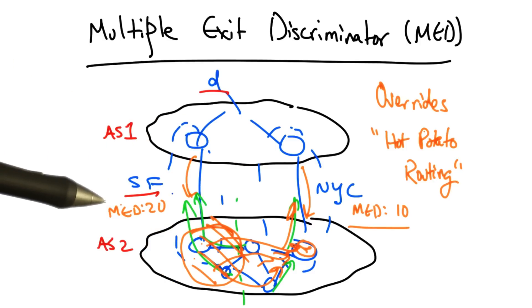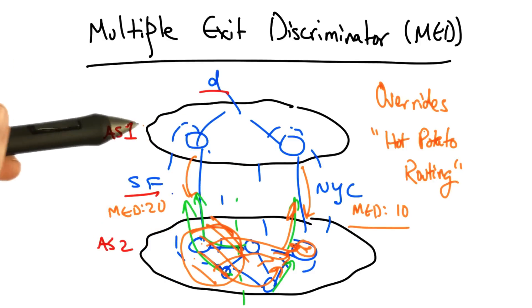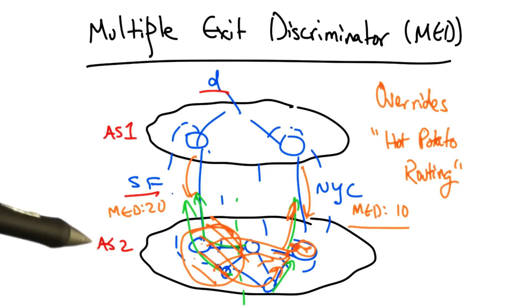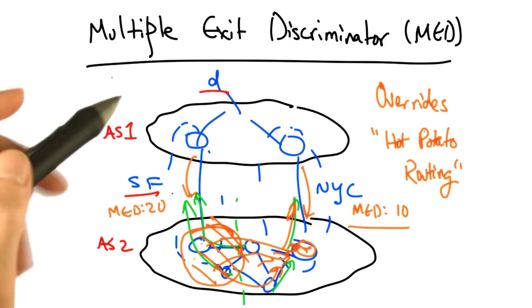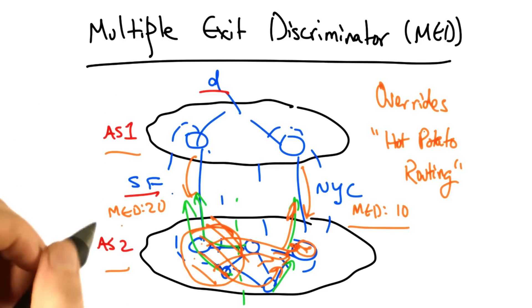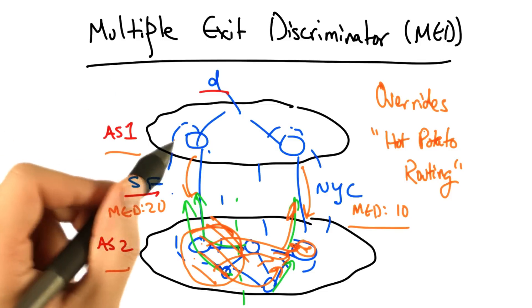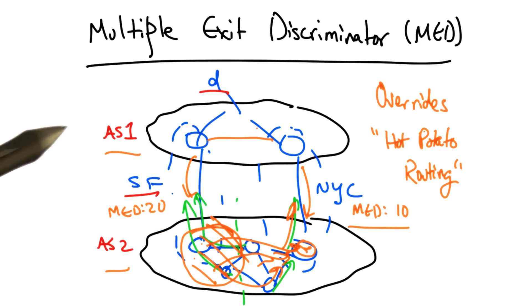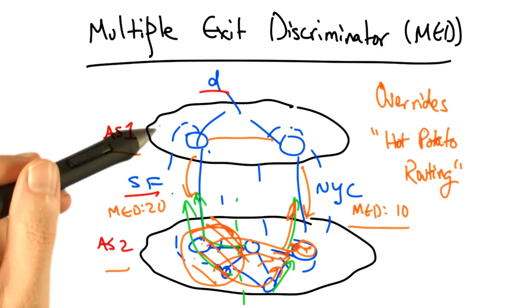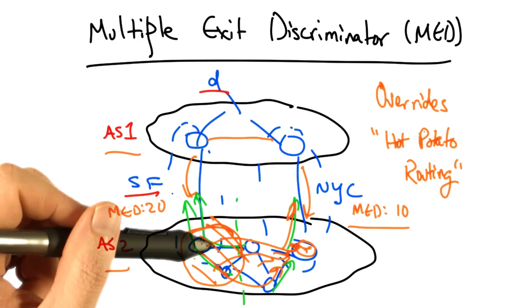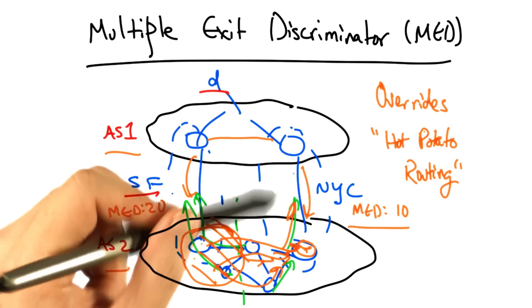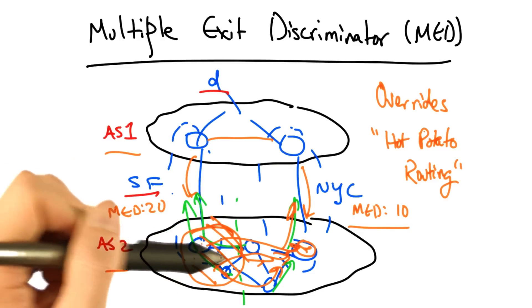MEDs are typically not used in conventional business relationships, but they're sometimes used if AS1 does not want AS2 free riding on AS1's backbone network. Effectively, MED allows AS1 to say, yes, I will connect or peer with you, but it is your job to carry the traffic long distances across the country.